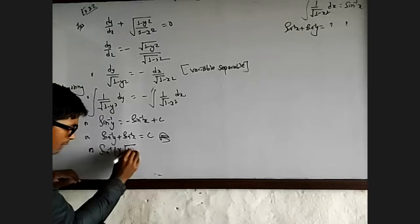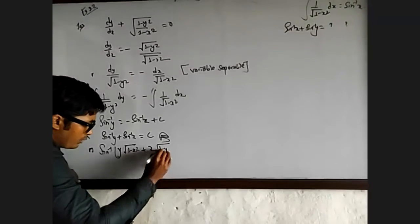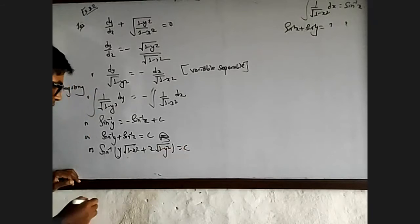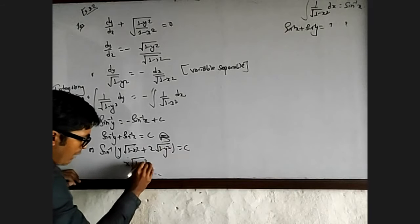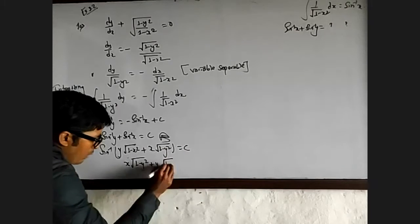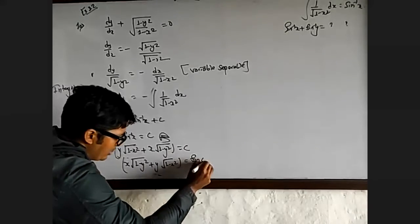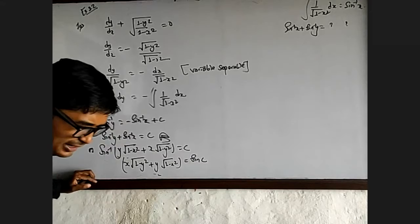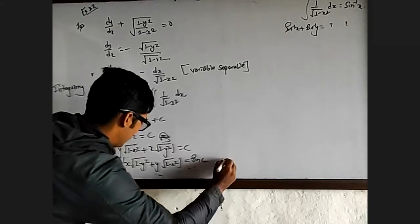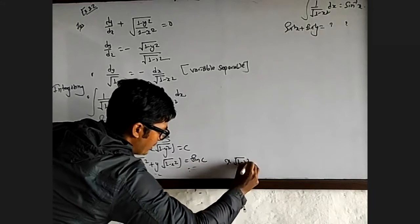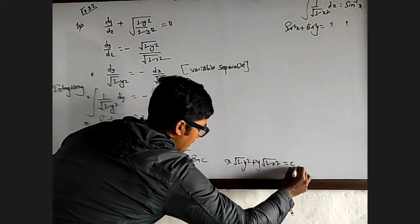So expanding: y times the square root of one minus x squared, plus x times the square root of one minus y squared. Our final answer is x√(1 - y²) + y√(1 - x²) equals C.